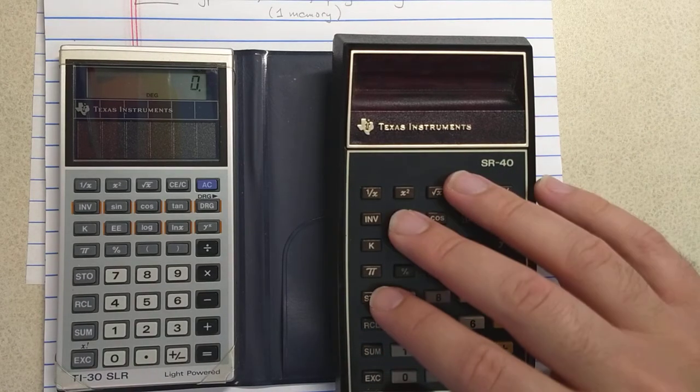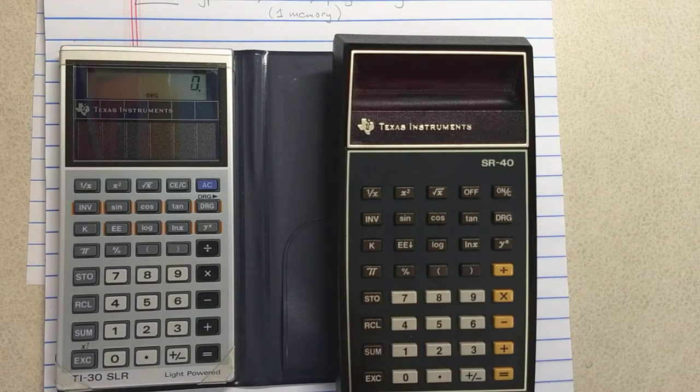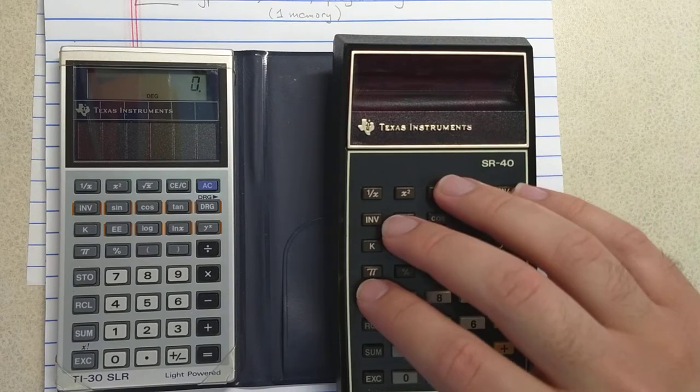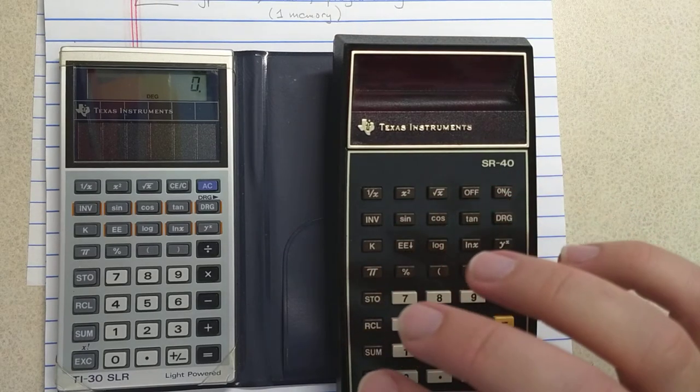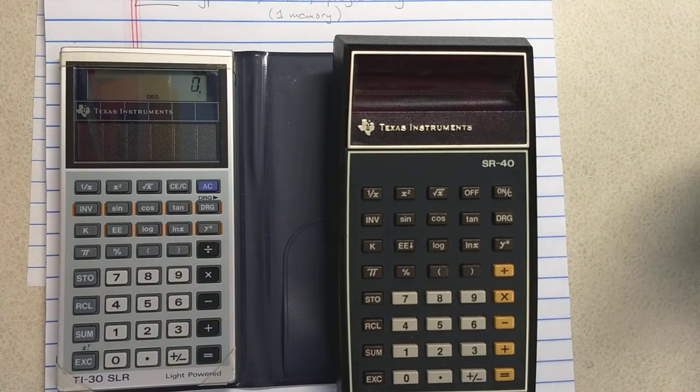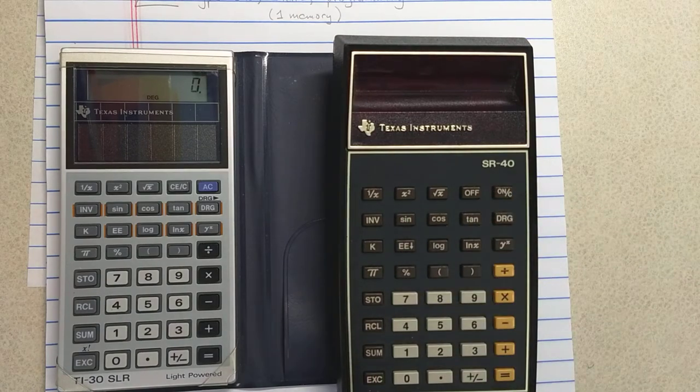So TI is kind of the bargain competitor to HP in the market. But the TI-30, the cheaper version of this SR-40, is finally cheap enough where it's cheaper than the typical slide rules you can get. And so why would you buy a slide rule? So that's the argument for why the TI-30 finally kills the slide rule off.